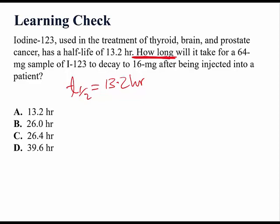For a 64 mg sample of iodine-123 to decay to 16 mg after being injected into a patient. So, we have iodine-123, and we have 64 mg of it injected into a patient. We want to know how long it will take to decay to 16 mg.